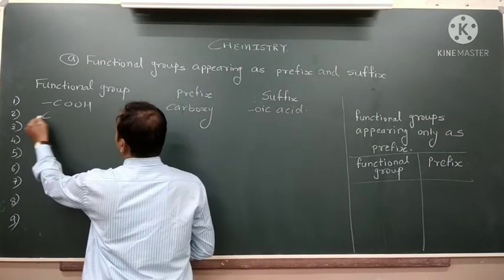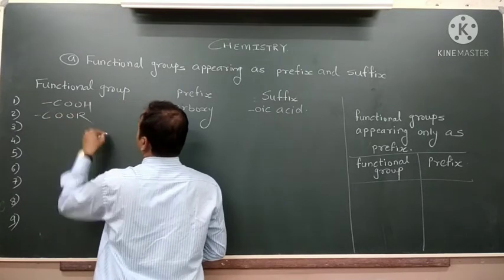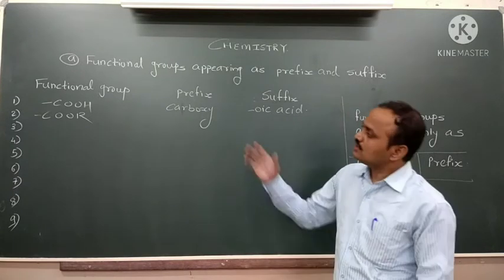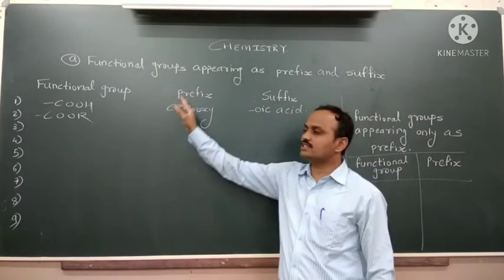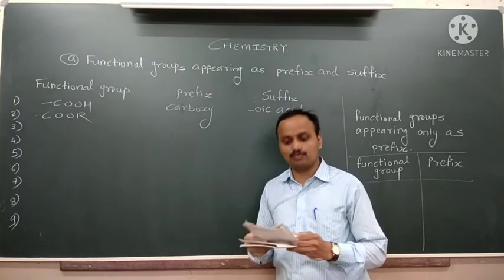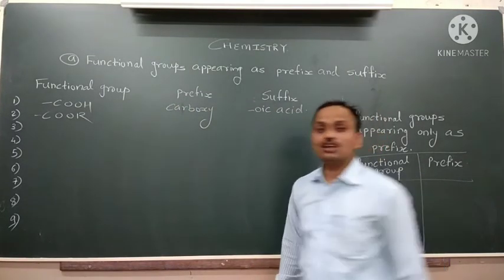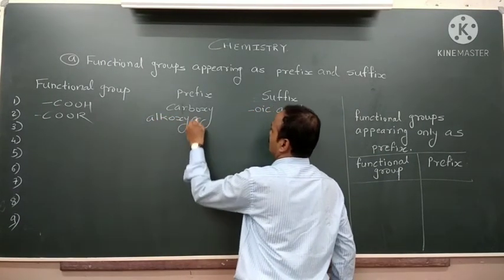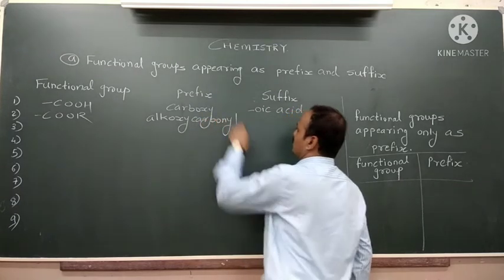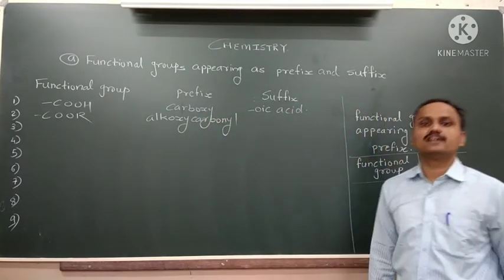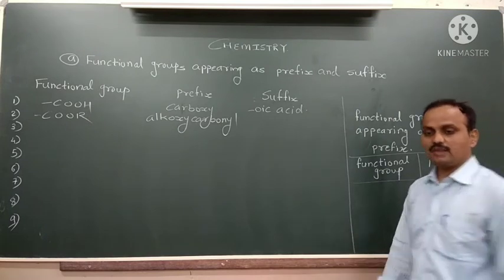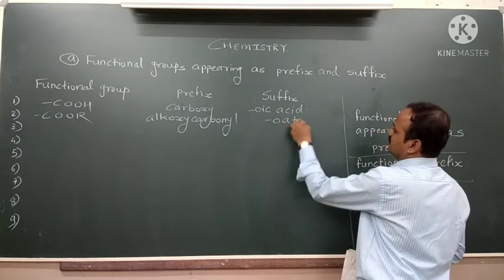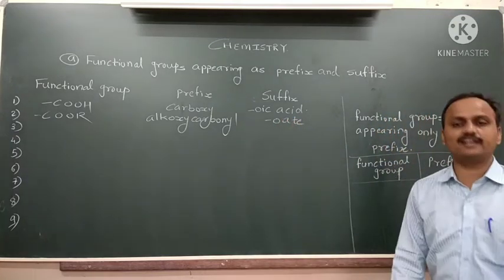Next is –COOR, the ester functional group. When the ester functional group comes as a substituent and we write it as a prefix, the name is 'alkoxycarbonyl'. When it acts as a suffix, the name ends in '-oate', for example, ethanoate, propanoate, etc.